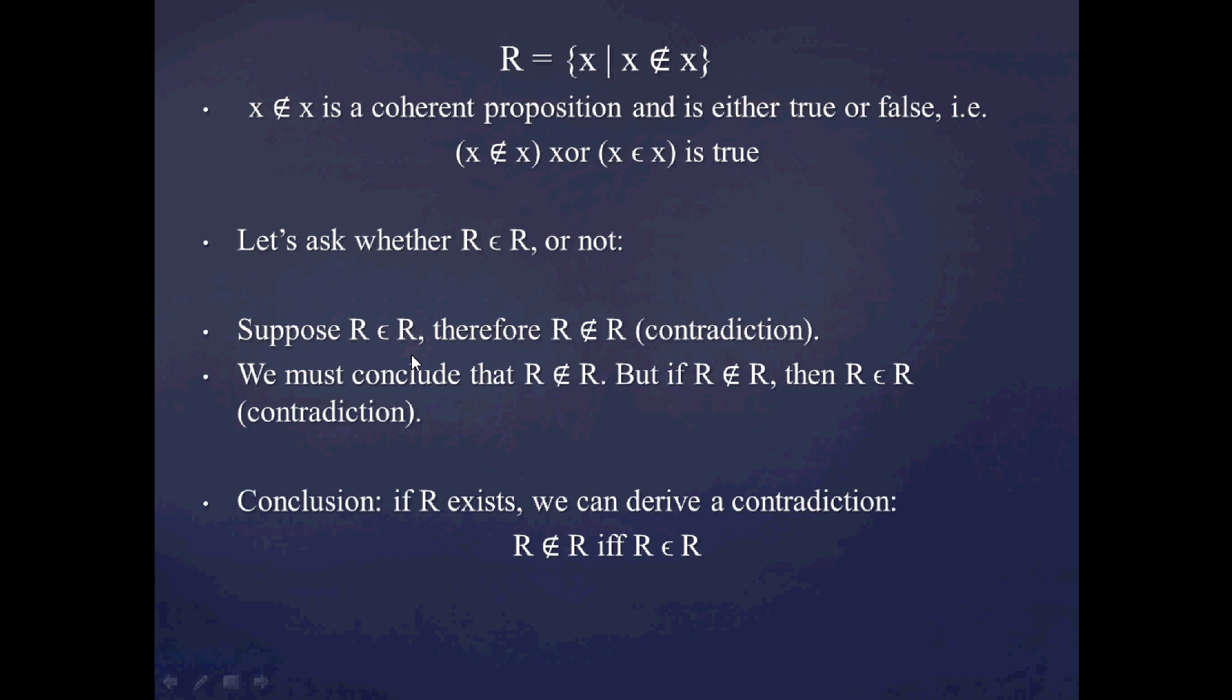So what I see is that neither of these two statements, R being an R and R not being an R, can be true. So the conclusion that we draw from this, from this pathological question, is that if this set R exists, we can derive the truth of a contradiction, namely that R being in the set R implies that R, sorry, R not being in the set R implies that R is in the set R. And conversely, R being in the set R implies that R is not in the set R.